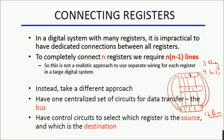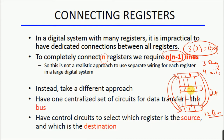If each register is just one bit, to connect three registers we need three lines, but these lines are bidirectional, so effectively double the number of lines will be required — one for read and one for write. This means that to connect n registers, n−1 lines are required. To connect three registers, six lines are required when they are just one bit. If each register is 4-bits wide, multiply by 4, so 24 lines will be required.